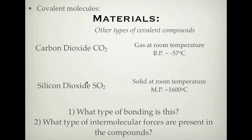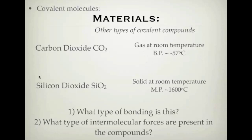The next slide is a question where you want to explain what type of bonding is present. We're looking at carbon dioxide, which is a gas at room temperature with a very low boiling point, and silicon dioxide (SiO2), which is a solid at room temperature with a very high melting point. They appear to have a similar structure, but think about what type of covalent bonding is causing these different properties. Pause and write down what you think before we discuss.